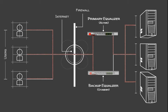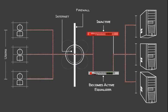That's where active-passive or active-standby failover comes in. An active-passive failover configuration includes two equalizers — one processes traffic while the other remains in standby mode and becomes active in the event of a failure. Coyote Point also supports a more complex active-active mode, but this presentation focuses on active-passive.